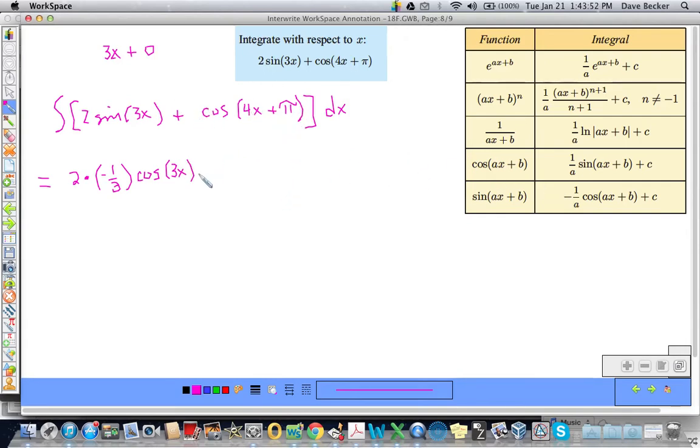All right? AX plus B. So that's going to be plus my A is 4. So 1 over 4. And the integral of cosine is sine 4X plus pi. And I am done for the most part. Plus C. So I clean that up a little bit. That's negative 2 thirds cosine of 3X plus 1 fourth sine 4X plus pi plus C. Last example.